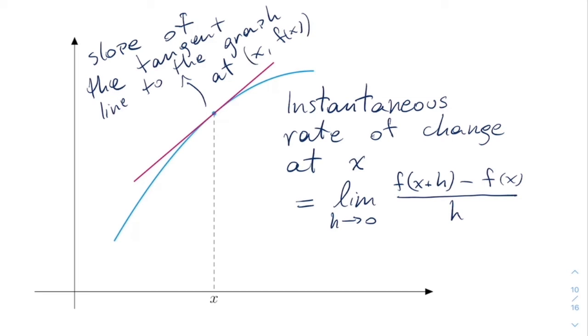So remember in the past the average rate of change corresponded to the slope of the line connecting those two points. Now if we want to find the instantaneous rate of change, it's the same as finding the slope of the tangent line to the graph at that point.